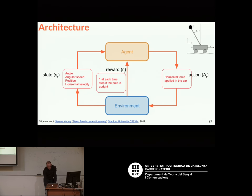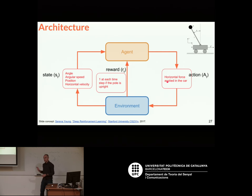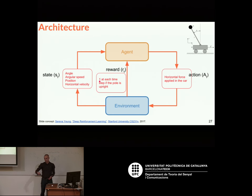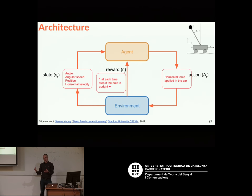If you want to train a system to do that, one solution is to provide a plus-one reward every time the pole is upright. If you do that, you might manage to train an agent that will actually learn that, as it tries to maximize the reward, it will try to keep the pole as vertical as possible.